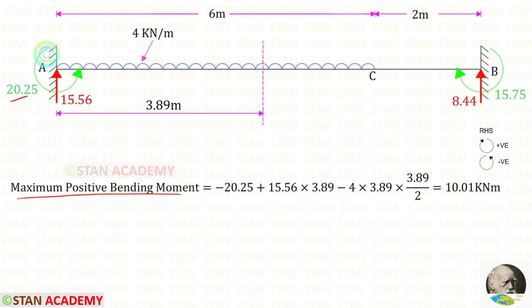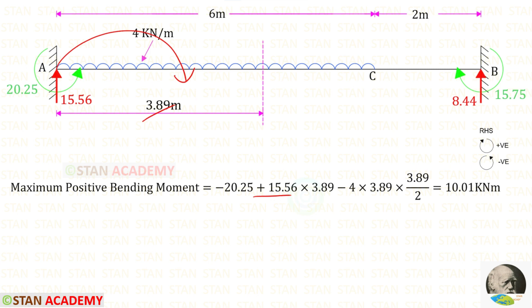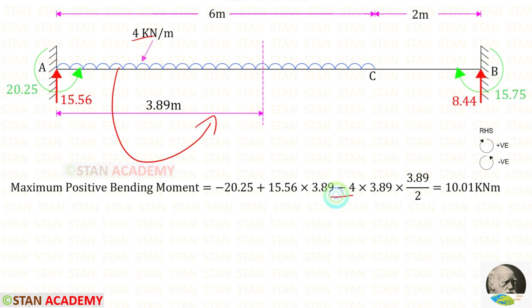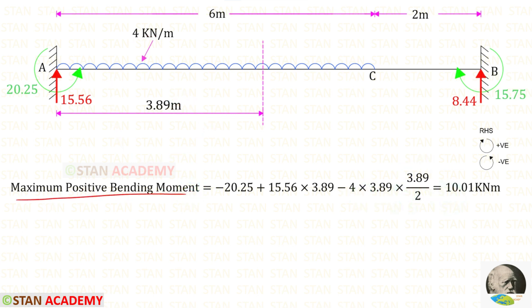Now let us find the maximum positive bending moment. The moment MA is acting in the anticlockwise direction so it is negative. The reaction at A is clockwise so it is positive, with distance 3.89. The UDL is anticlockwise and negative, and with the UDL we multiply distance × distance/2. For the maximum positive bending moment we will get 10.01 kilo newton meter.